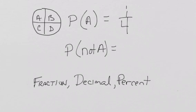What's the probability of getting not an A? 3 fourths. So if you add those two together, you'll get 4 fourths or 1. So those two events are complements.